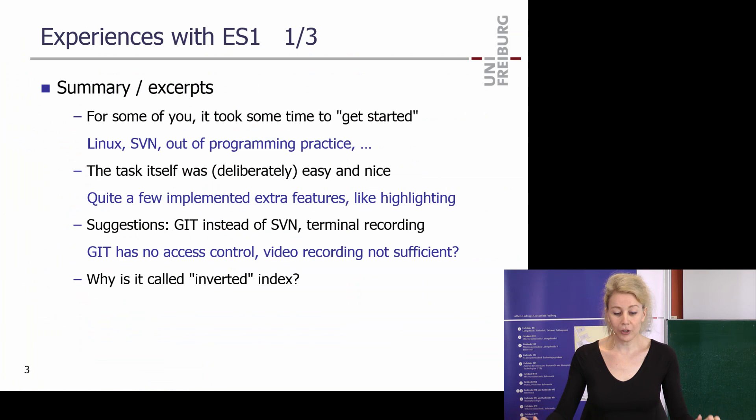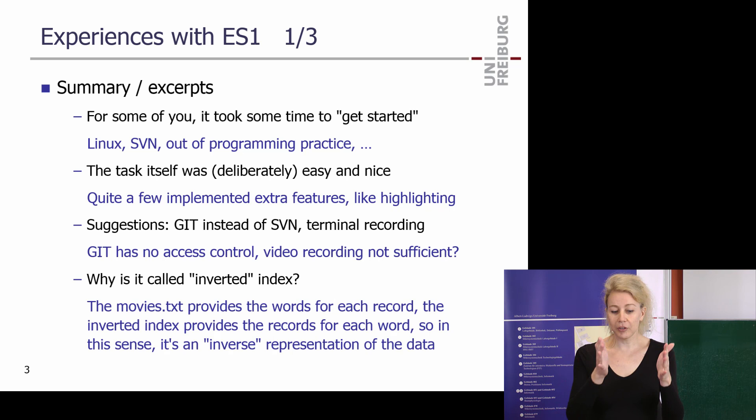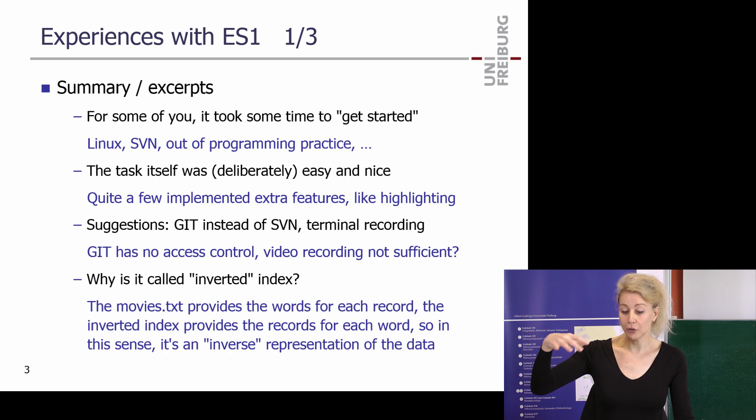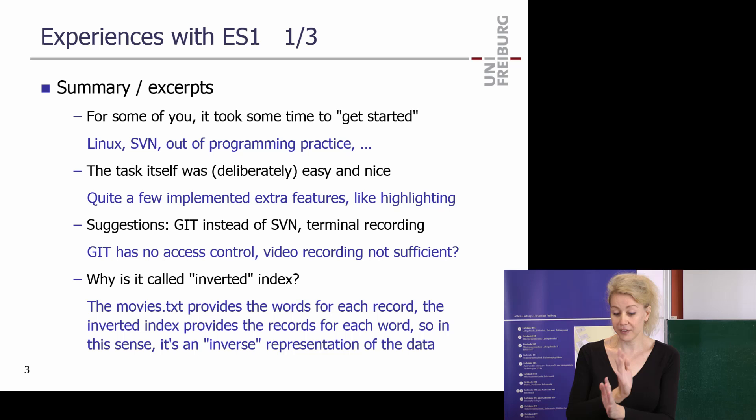Why is it called an inverted index? If you think about it, the movies dataset which we provided is listed by record or document — for each record it gives you all the words. What does an inverted index do? For each word, it gives you all the records or documents which contain that word. In that sense it's an inverse representation of the data — all the words for each record, all the records for each word. That's why it's called inverted.